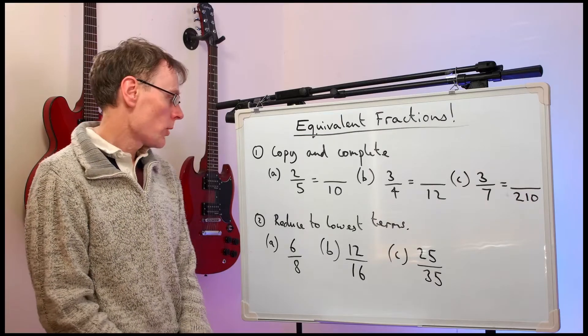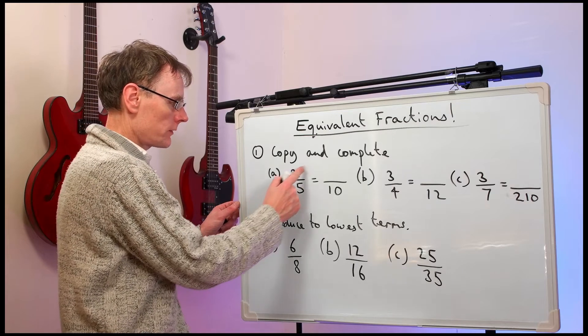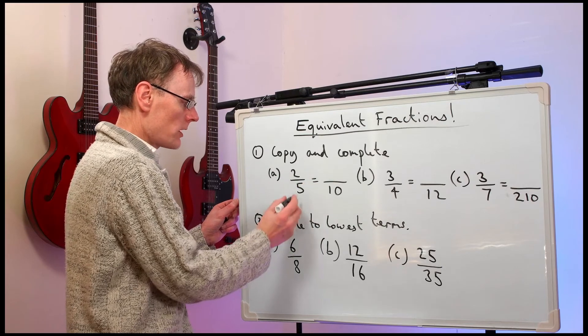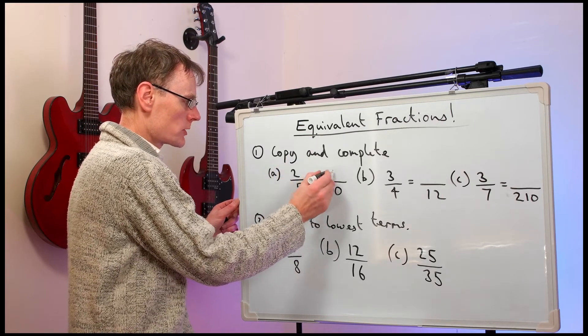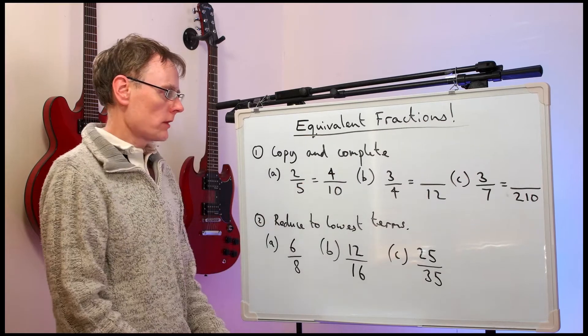OK, answers number one. Part A. Two-fifths is something out of ten. The bottom has been multiplied by two. So we multiply the top by two. We get four-tenths.